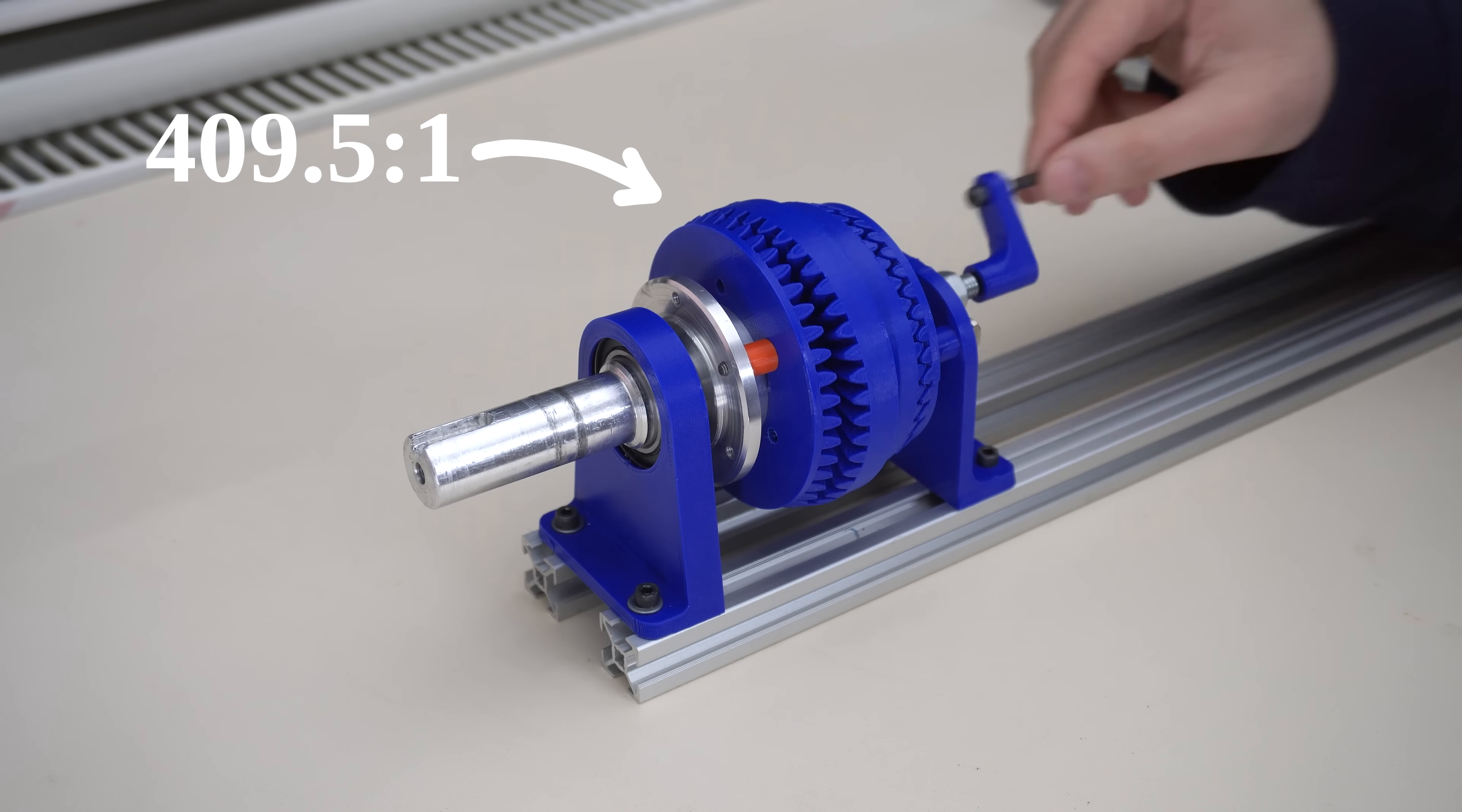You could achieve this with a worm gear too, and it would be quite compact. Now here we have also got just four gears, but this one has a 409 gear ratio. Hard to believe, right?